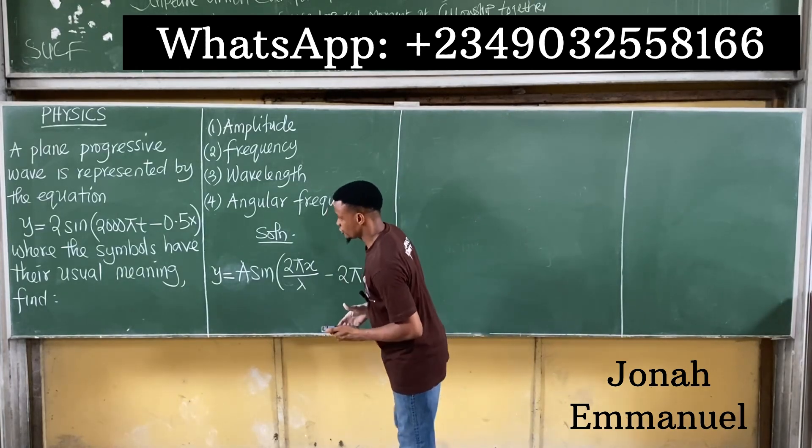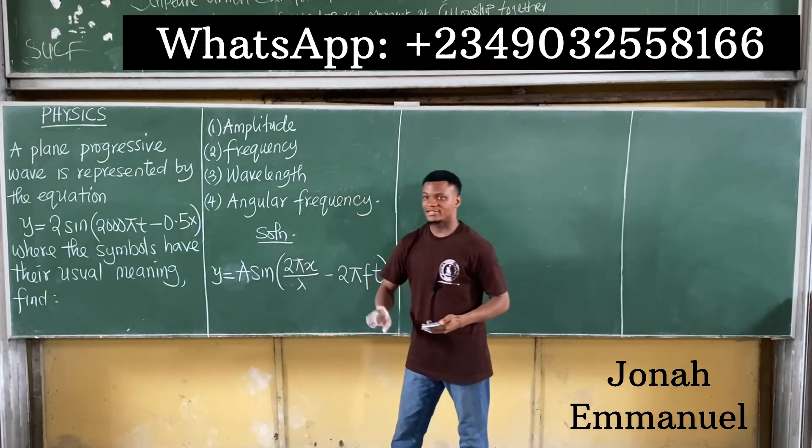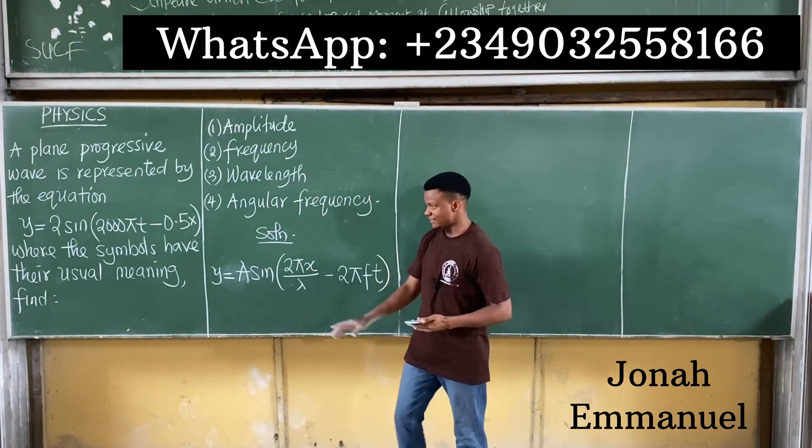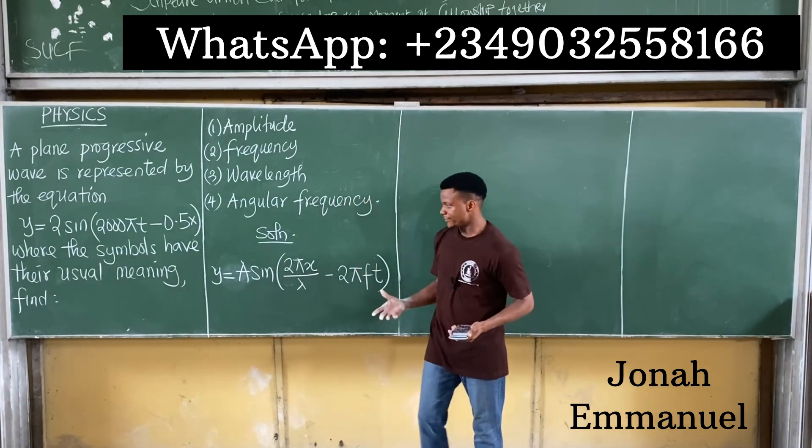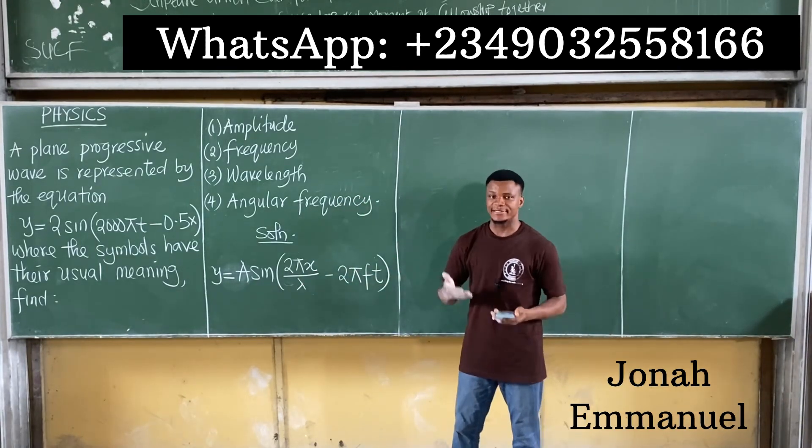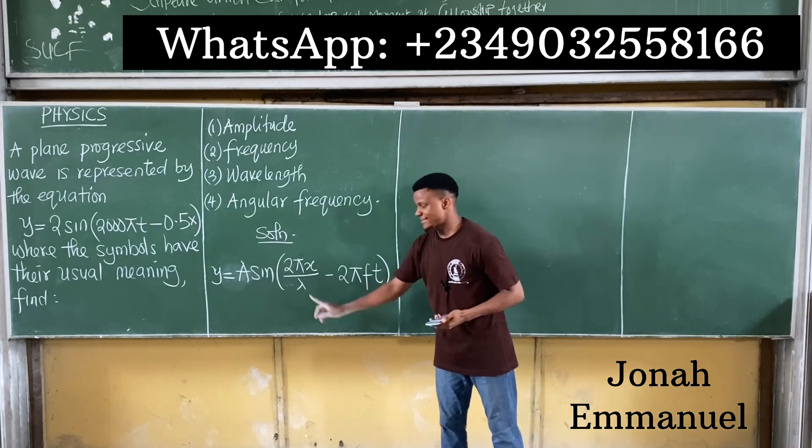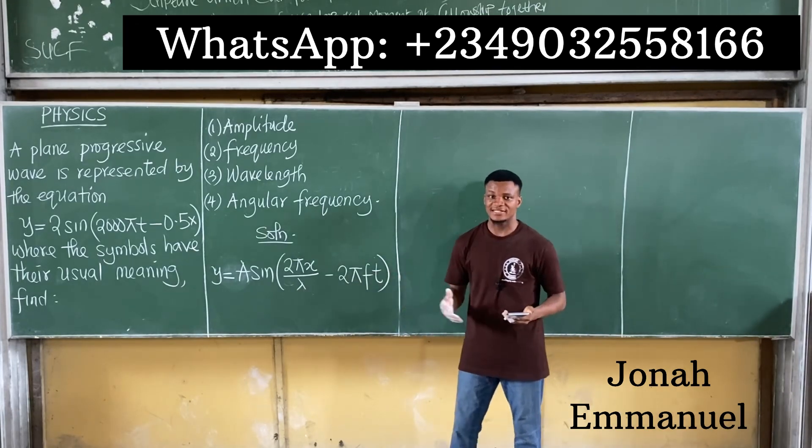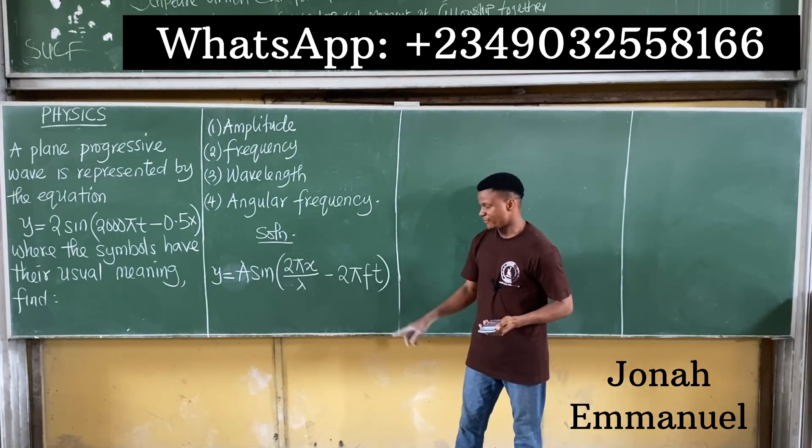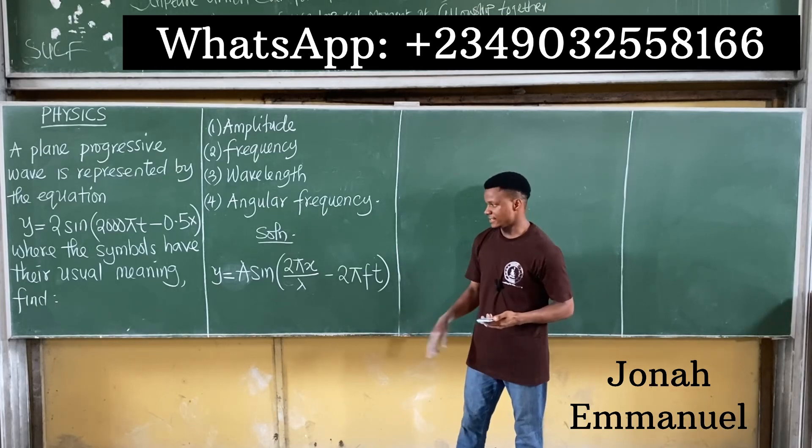If you say where the symbols have the usual meaning: y is the vertical displacement of the wave, A is the amplitude, x is the horizontal displacement, λ represents the wavelength, f represents frequency, and t is time.